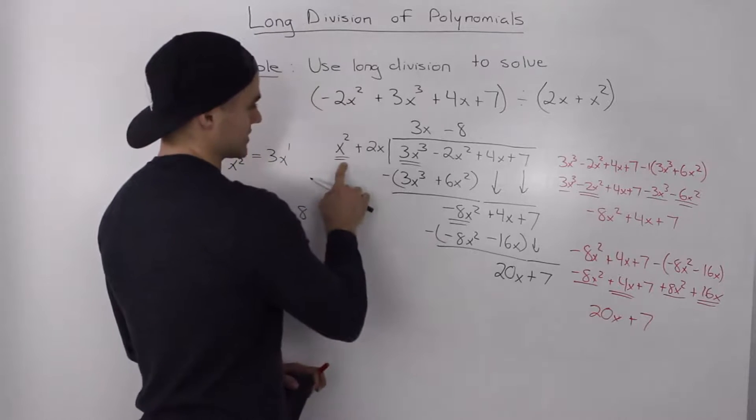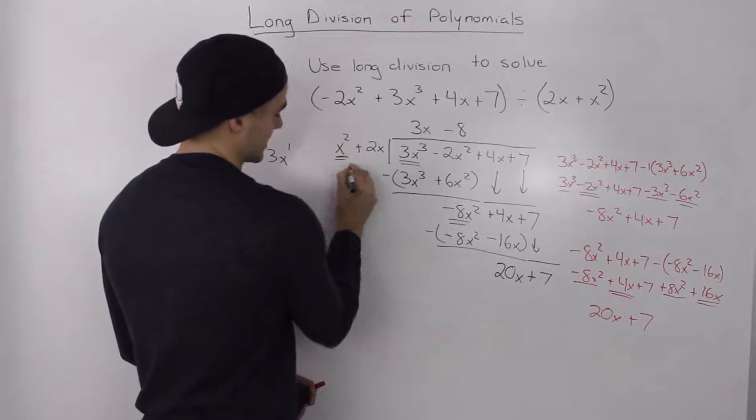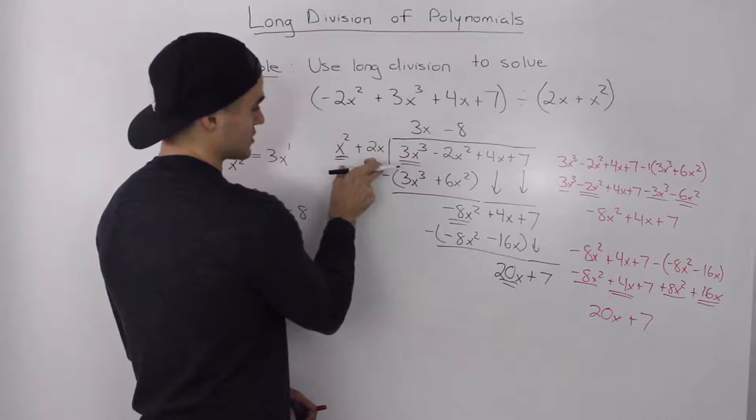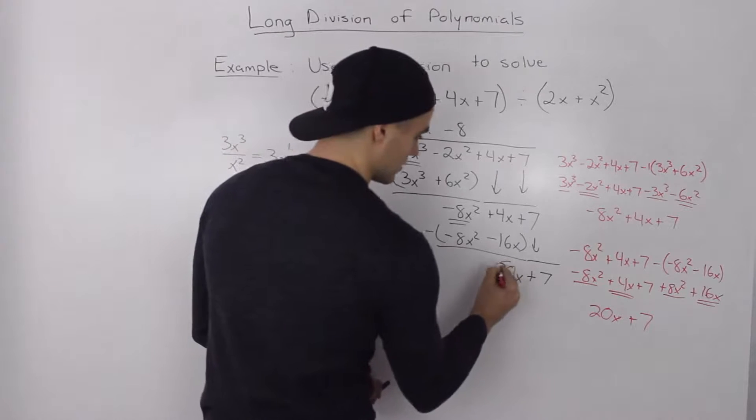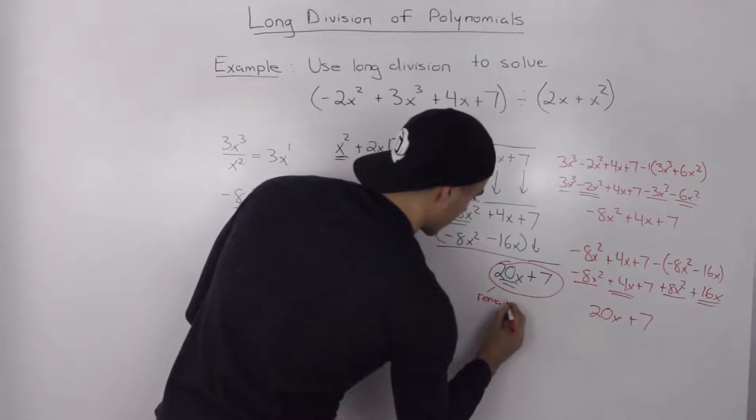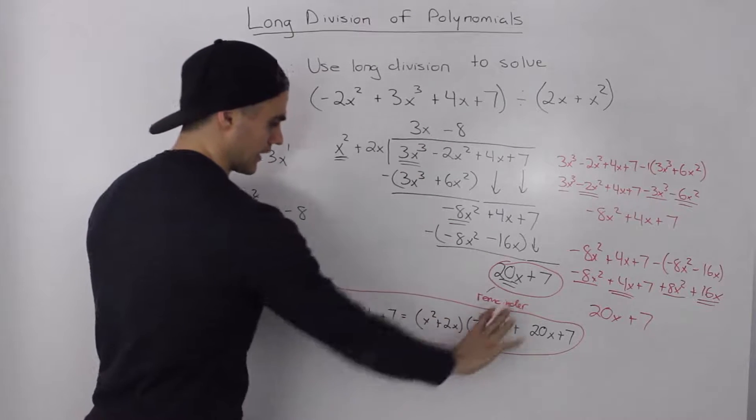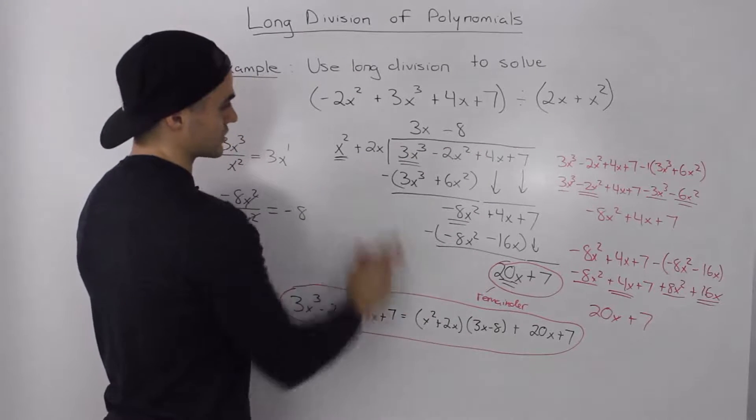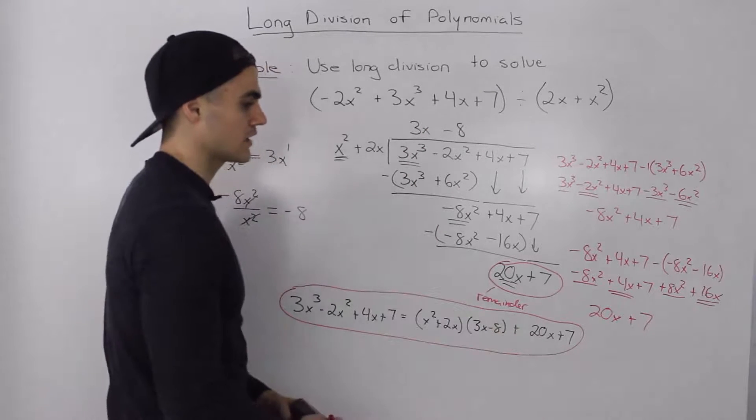Now how many times does x squared plus 2x go into 20x plus 7? How many times rather does this x squared go into 20x? Well it can't go in because the degree of the divisor is greater than the degree of what we're left with. So this here, this 20x plus 7, this ends up being our remainder. So to finish this off, I took this result and I wrote it in a division statement here. So basically the dividend is equal to the divisor of x squared plus 2x times the quotient of 3x minus 8 plus the remainder of 20x plus 7.